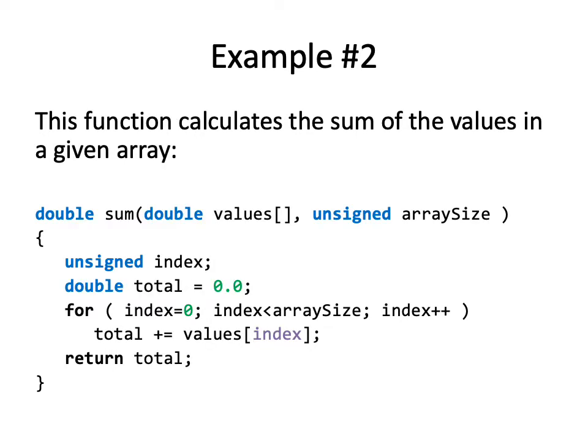Example number two. This function calculates the sum of values in a given array. So now we're using doubles. And now, we're including a return value. So, whereas the last example was void, now we're returning a double, which is the sum.